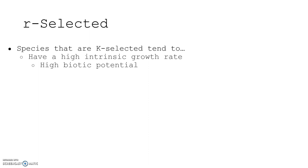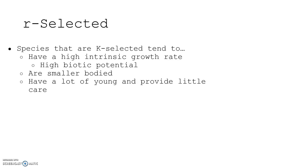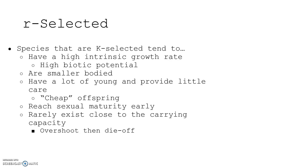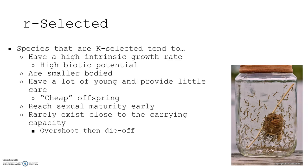R-selected species tend to have a high intrinsic growth rate and high biotic potential. They're smaller bodied, grow fast, have a lot of young, and provide little care — they're cheap offspring, meaning not a lot of energy is invested. They reach sexual maturity early and rarely exist close to the carrying capacity. They overshoot, get a whole bunch, then there's a die-off, and then a whole bunch more and another die-off. Many forms of insects are R-selected.